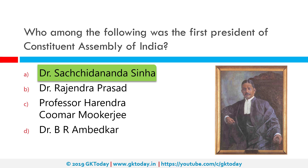Dr. Rajendra Prasad then became the president of the Constituent Assembly and would later become the first president of Independent India. The vice president of the Constituent Assembly was Professor Harendra Kumar Mukherjee, a former vice-chancellor of Calcutta University and a prominent Christian from Bengal, who also served as the chairman of the Constituent Assembly's Minorities Community. He was appointed governor of West Bengal after India became a republic.